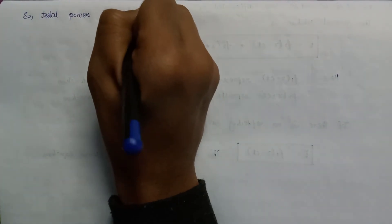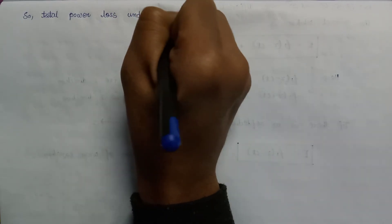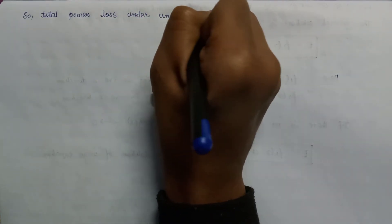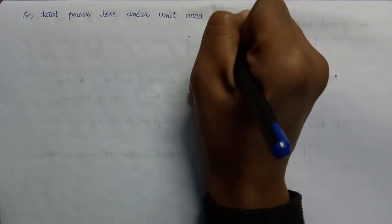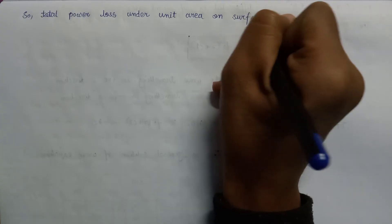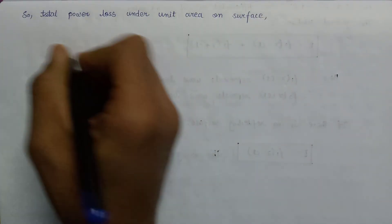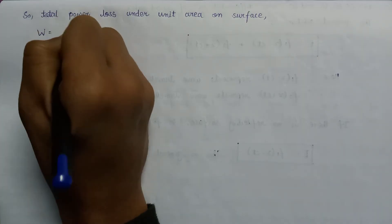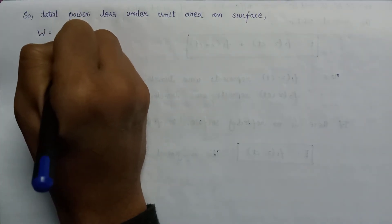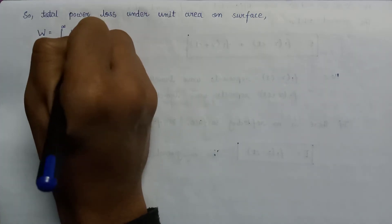If we talk about the total power loss per unit area on the surface of the conductor, it is given as W, and the value of W equals the integral from zero to infinity of the ohmic losses dw associated with this slab.